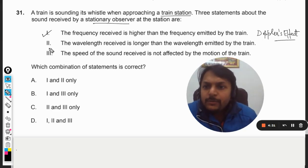And then point number two, the wavelength received is longer than the wavelength emitted by the train. Well, this cannot be because the frequency has increased. It means that wavelength has to be shorter, so this is wrong.